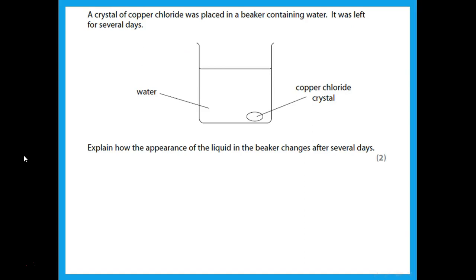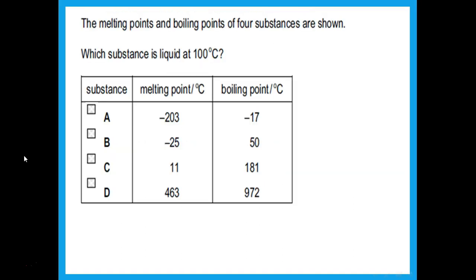A crystal of copper chloride was placed in a beaker of water and left for several days. Explain how the appearance of the liquid changes. Copper is a transition metal, and compounds of transition metals are colored. When placed in water, the color will spread throughout the liquid by the process of diffusion.